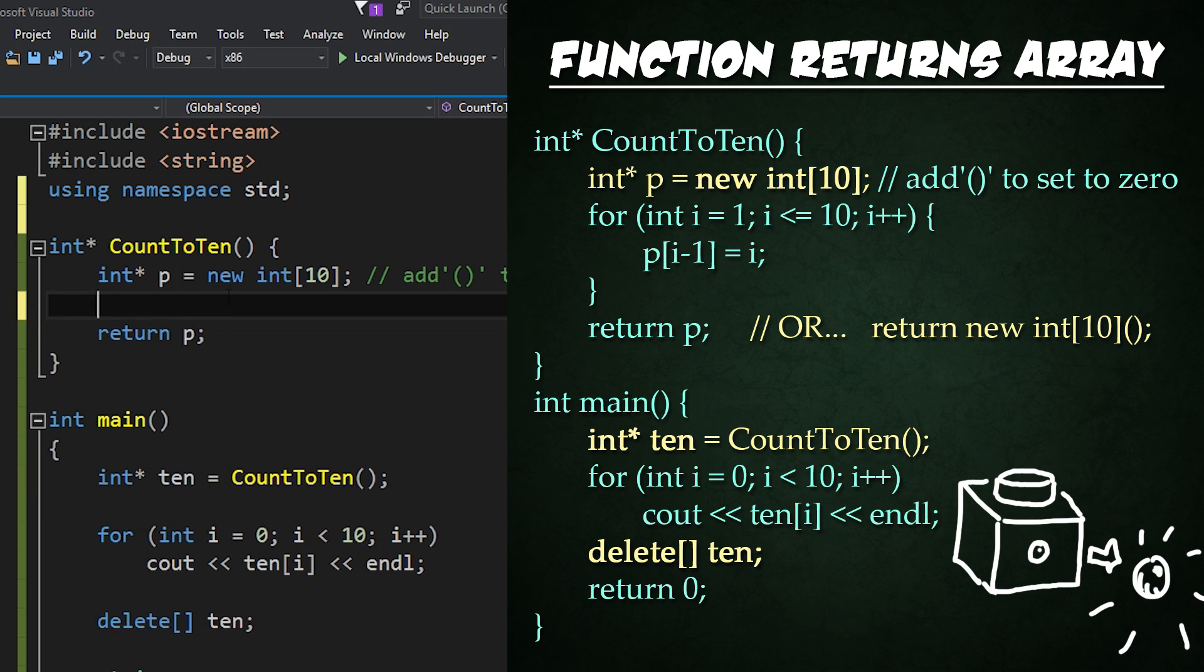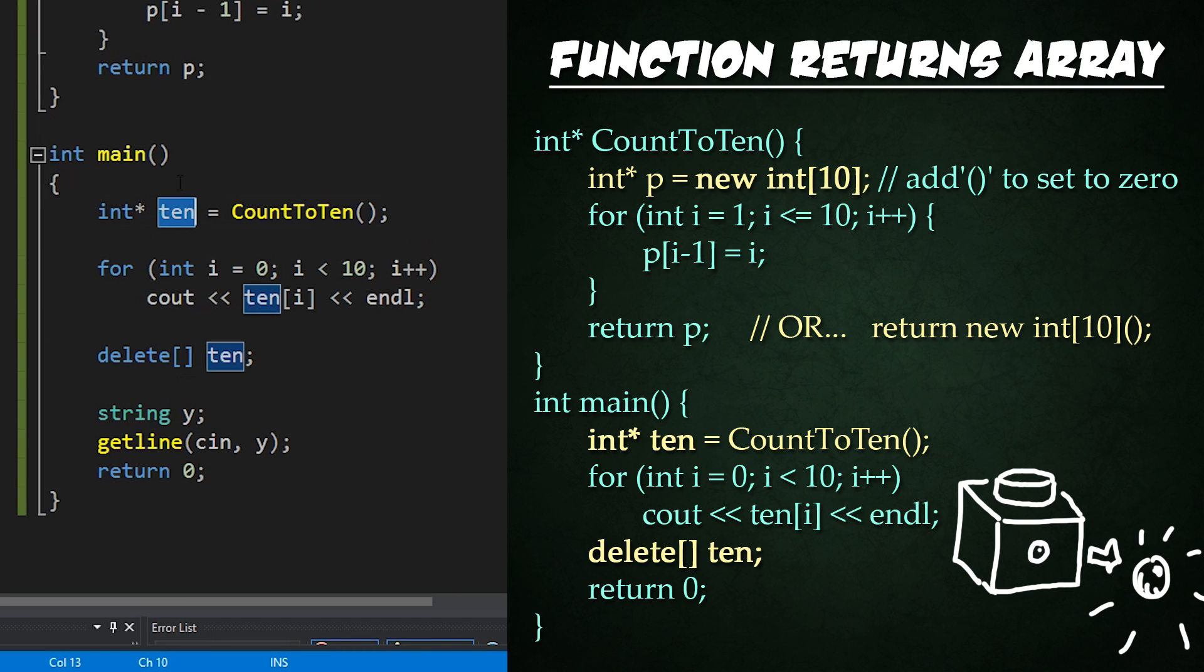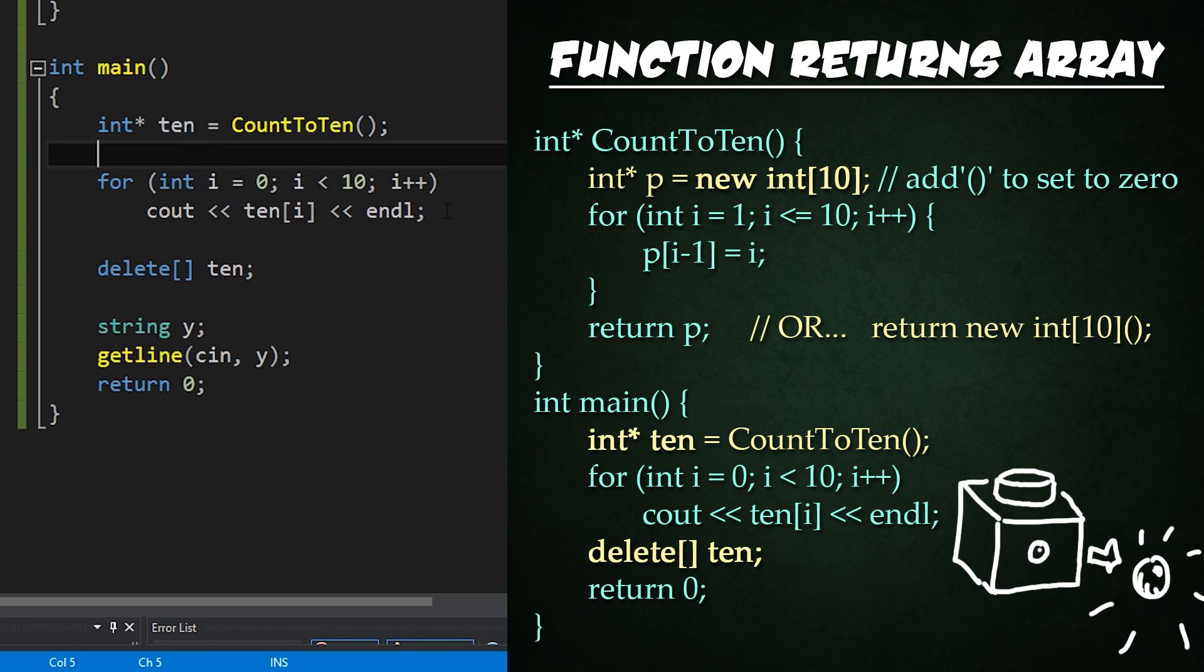Now, if we wanted to, we could actually delete this, and we could add open and close parentheses right here, and that'll initialize the whole array to values of 0. Okay, and outside of it, I have a pointer that's called 10, and then I'm going to be creating a simple loop that iterates through all the values of 10 and outputs them.